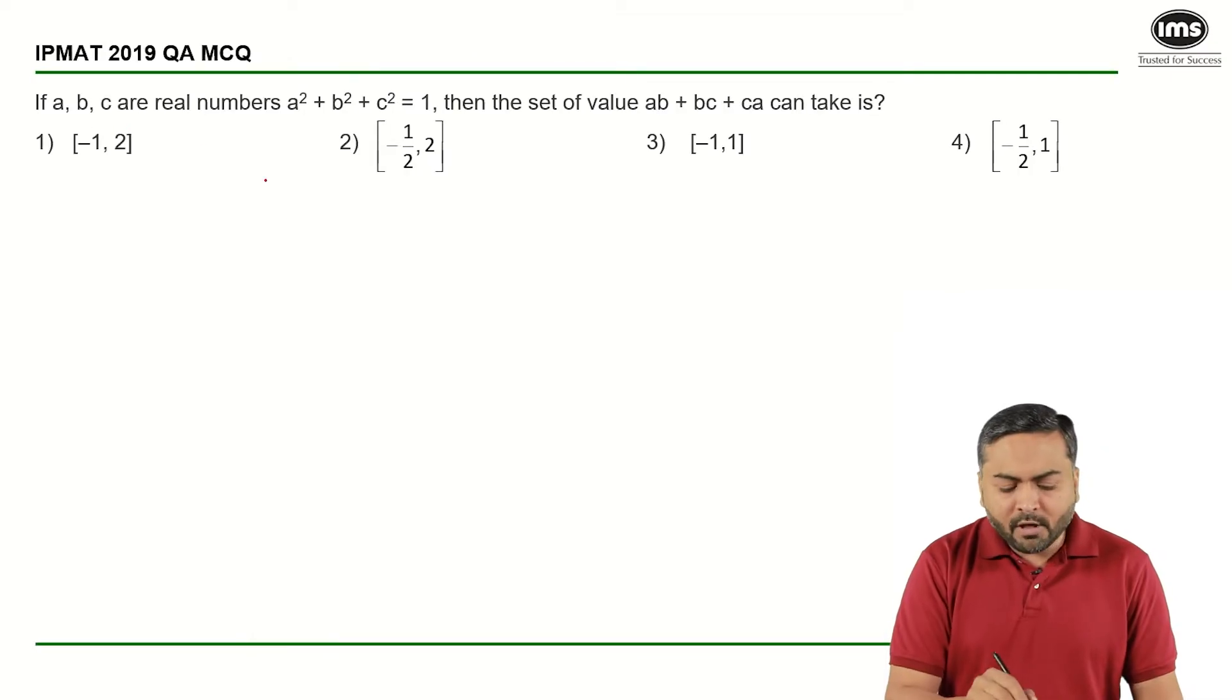If A, B, C are real numbers and A² + B² + C² = 1, then the set of values AB + BC + CA can take is.